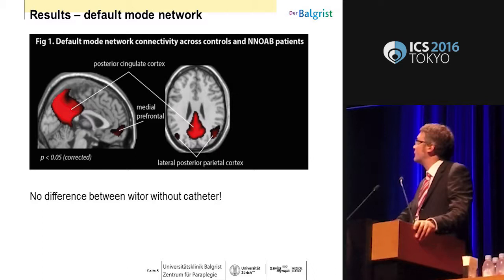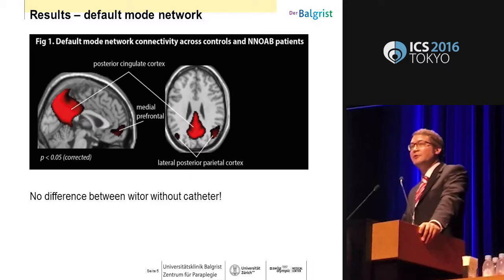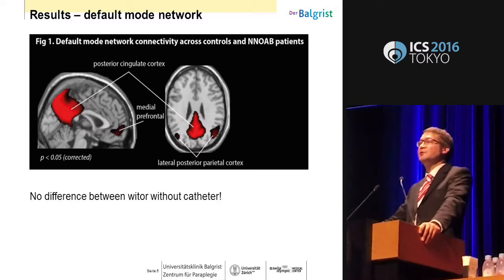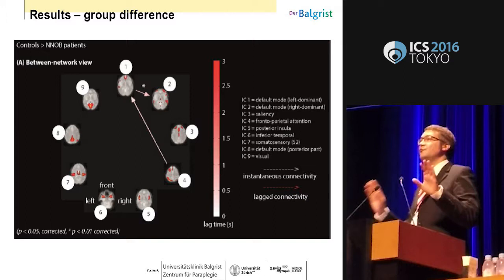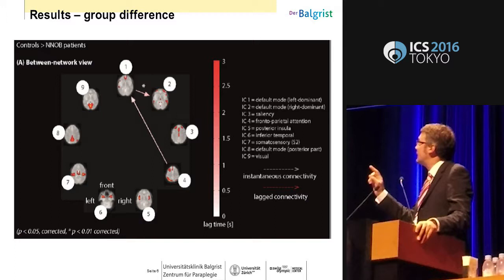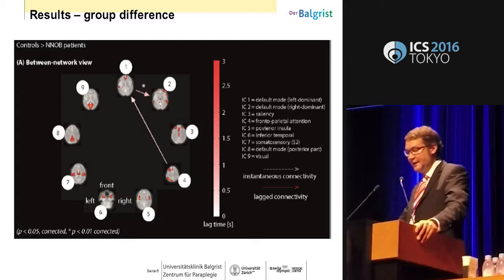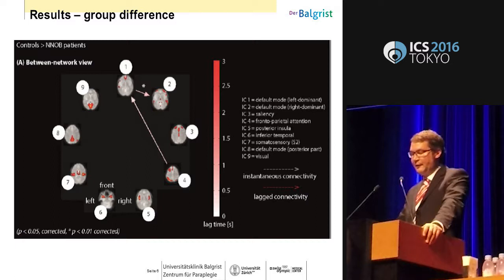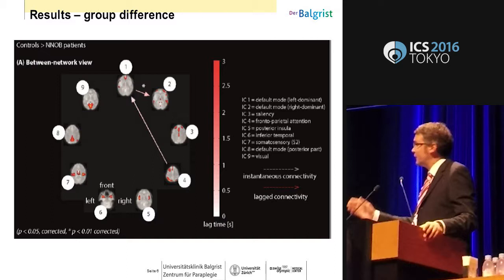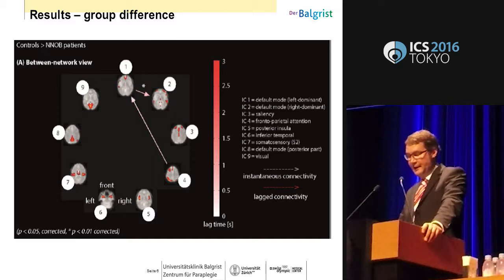In the whole group, we could nicely demonstrate the default network as an example of the networks we can picture in those subjects. We found no difference between the catheter and without-catheter situations — that was an important first finding, showing the catheter itself doesn't change much. However, comparing OAB patients versus healthy subjects across all nine neuronal components, we see a clear significant difference — especially in the directed connectivity between the central executive network, which is the frontal parietal attention network, towards the default network. This may be a first hint that we are searching in the right direction.